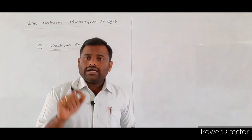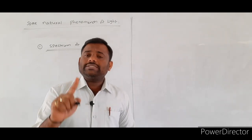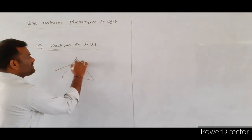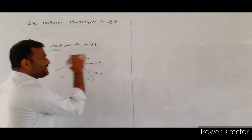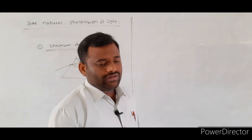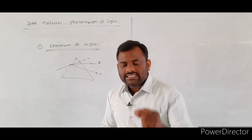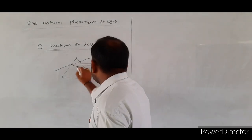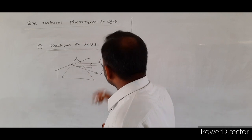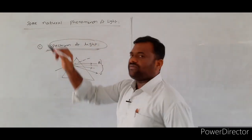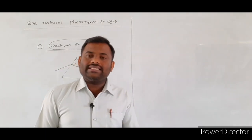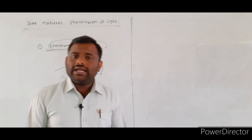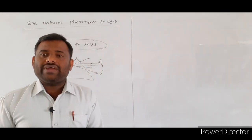We already discussed the concept of dispersion by the prism. Whenever a white light is incident on a given prism, that white light is split into seven different colors — such a phenomenon we call dispersion of the light. The color band we get from the prism is called the spectrum of the light. This is the first natural phenomenon observed in daily life when light is incident on glass refracting surfaces.